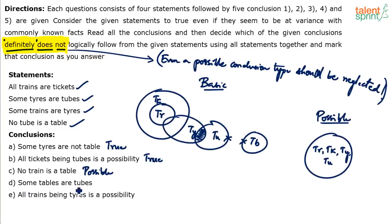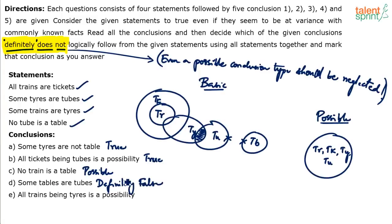Fourth conclusion: some tables are tubes. No — tables and tubes cannot overlap at all because they do not touch each other. So 'some tables are tubes' is definitely false. It is not just false in this case — it is always false, because tables can never touch tubes at all. This conclusion is always false.